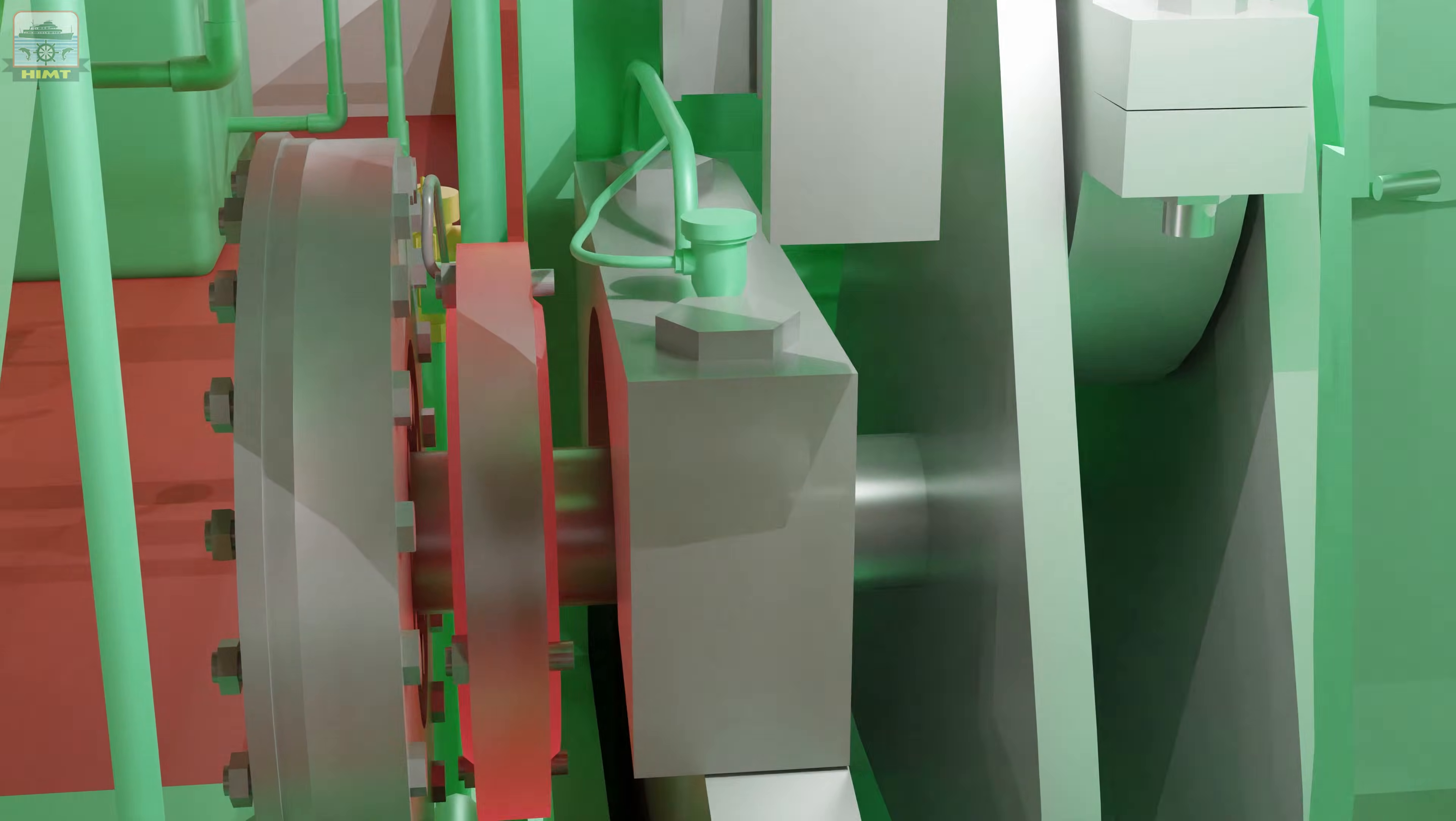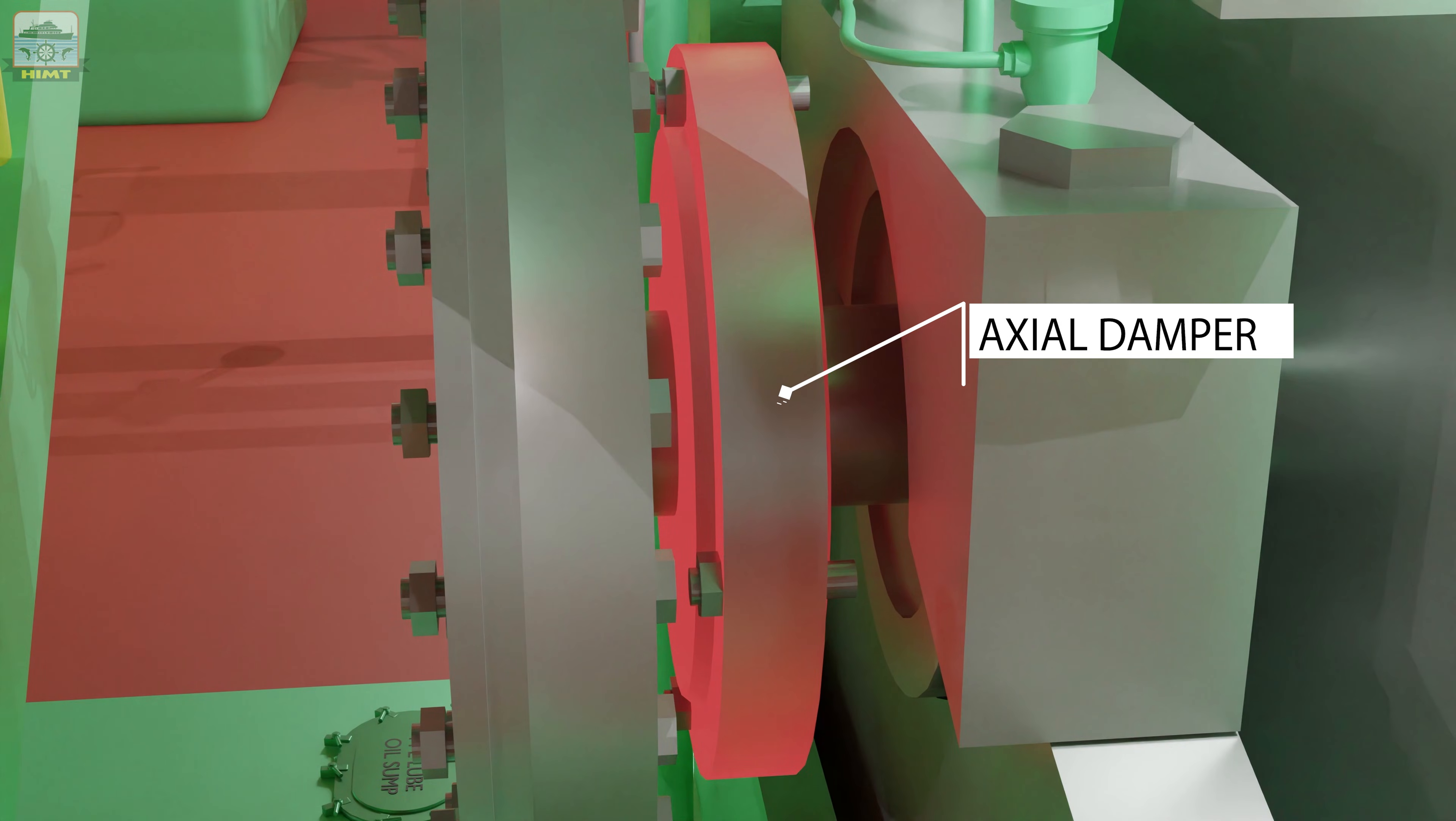The system supplies oil to the axial dampers to dampen the shaft generated axial vibration. Let us see the various components in the main lubrication system and how the lube oil flows from one component to another.